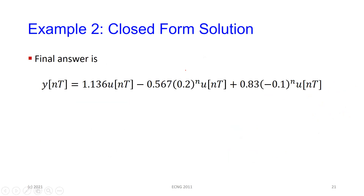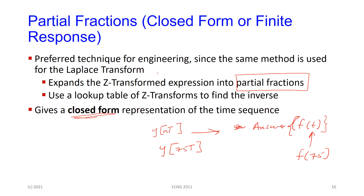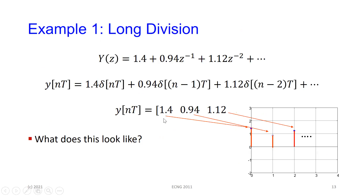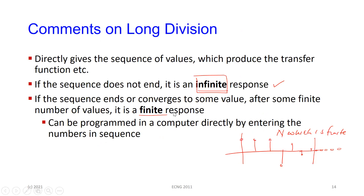And that is what I mean by the closed form solution. If I want to get Y(25), I just substitute n equal to 25 in the answer. So I can get Y(25), and so on. This answer is a closed form solution. And going back to the long division result, for instance Y(0) — we know Y(0) is 1.4. If I substitute n equals zero into the closed form expression, I should get 1.4. So the two results should be consistent.